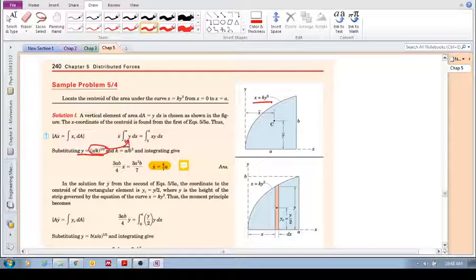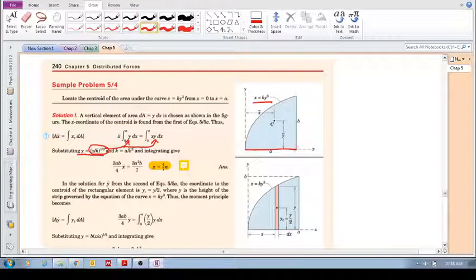You've got x over here, you've got this in terms of x: x over k to the power of the third dx. Everything is in terms of x, and we're integrating between zero and a. We're going from left all the way to the maximum x, which is a. Similarly for this one, we multiply x over k to the power of a third by x, integrate between zero and a. They also give you k, that constant, which is a divided by b cubed.